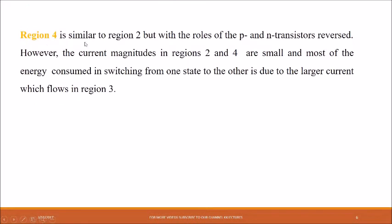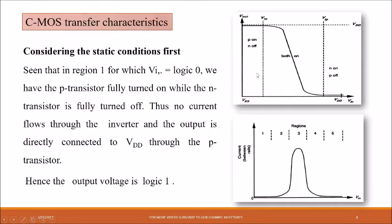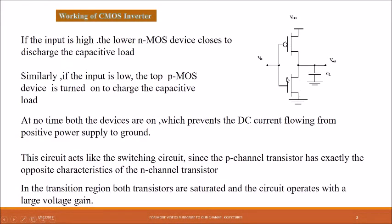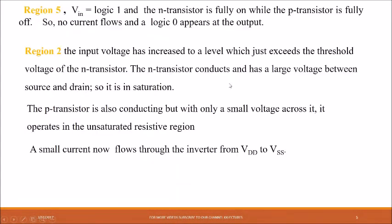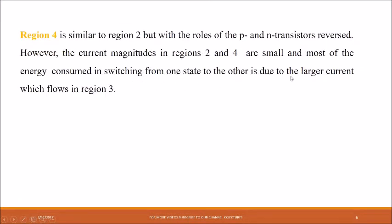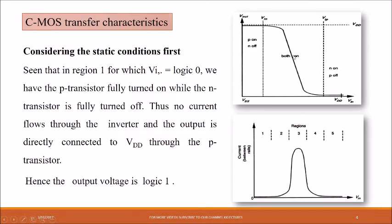Region 4 is similar to Region 2 but with the roles of P and N transistors reversed — in Region 4, PMOS is in saturation and NMOS is in the resistive region. However, the current magnitudes in Regions 2 and 4 are small, and most of the energy is consumed during switching from one state to the other due to the large current which flows in Region 3.